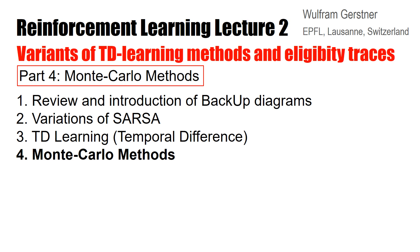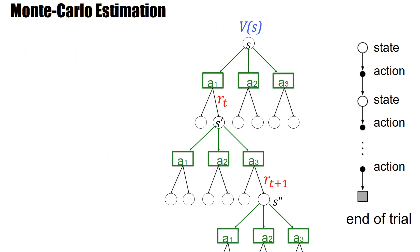Welcome to the lecture series on Reinforcement Learning and Artificial Neural Networks. In this video, I discuss Monte Carlo methods. We have seen that the V-value is an estimate of the total reward we can accumulate while we walk through the graph — it's the total expected return with a discount gamma. One idea would be: why use all these TD methods? We can just estimate it directly.